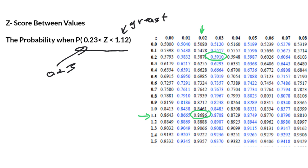So when I go and calculate my final set of information, you start with this. You write P of 0.23 is less than Z, which is less than 1.12. This can be rewritten as the top half, the top probability minus the bottom probability.